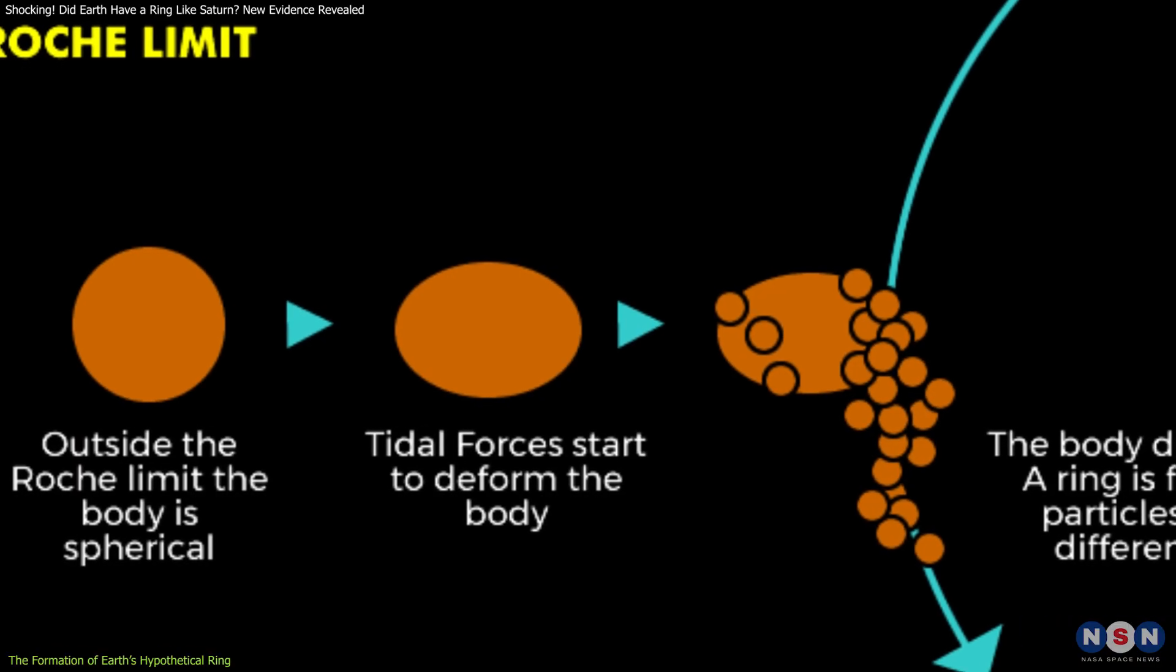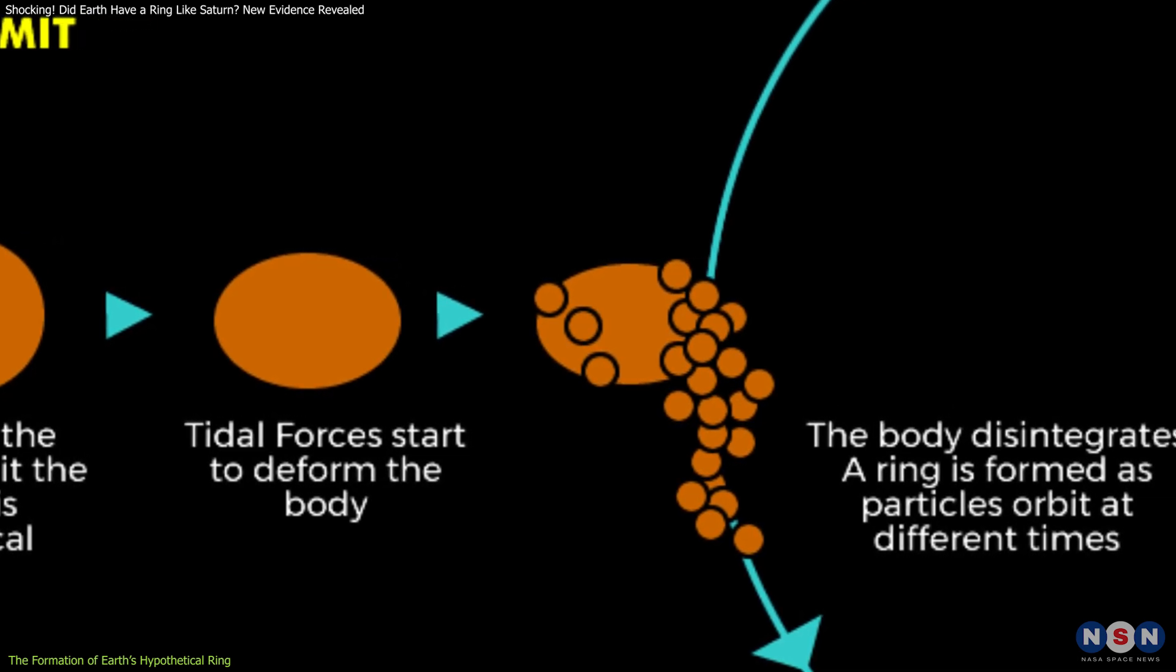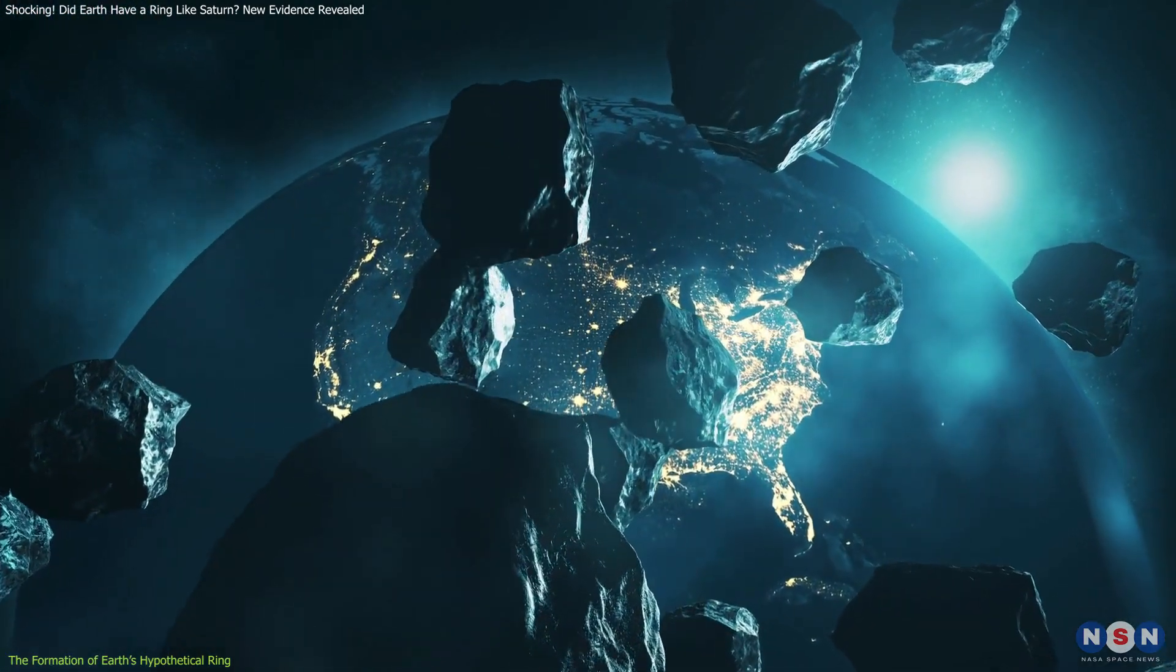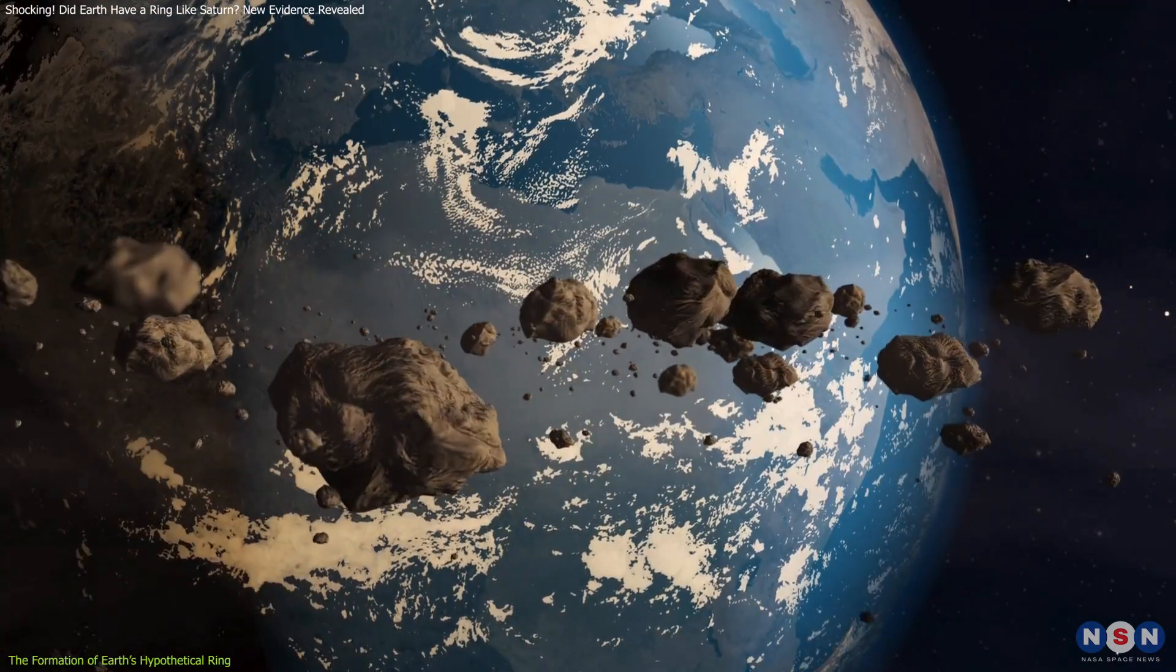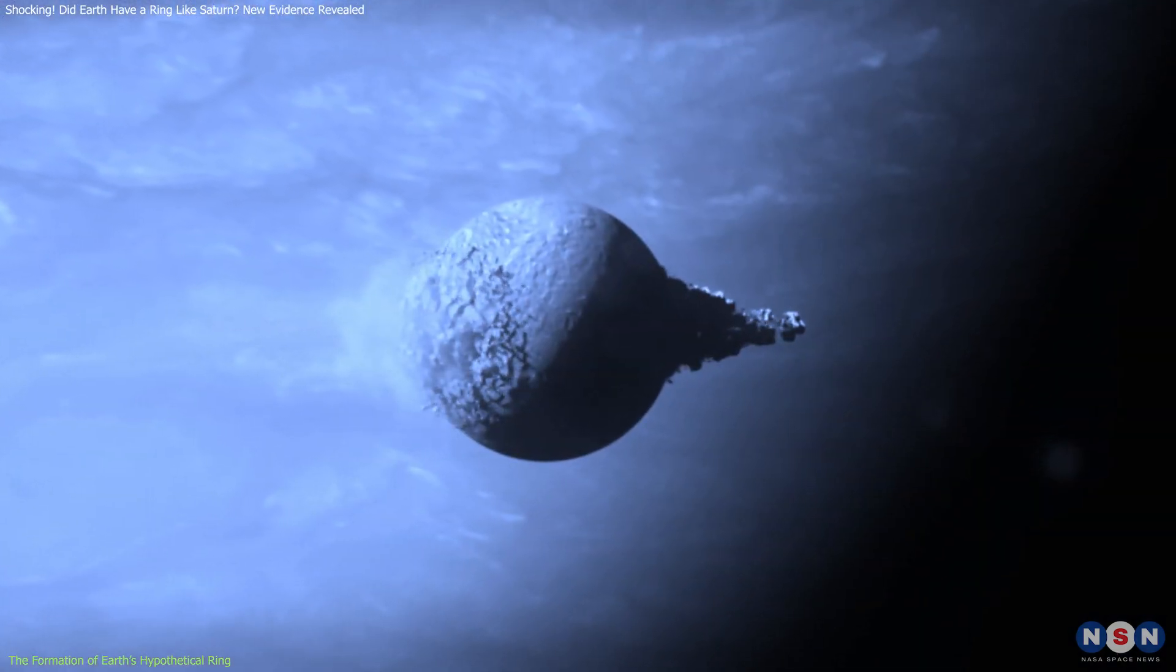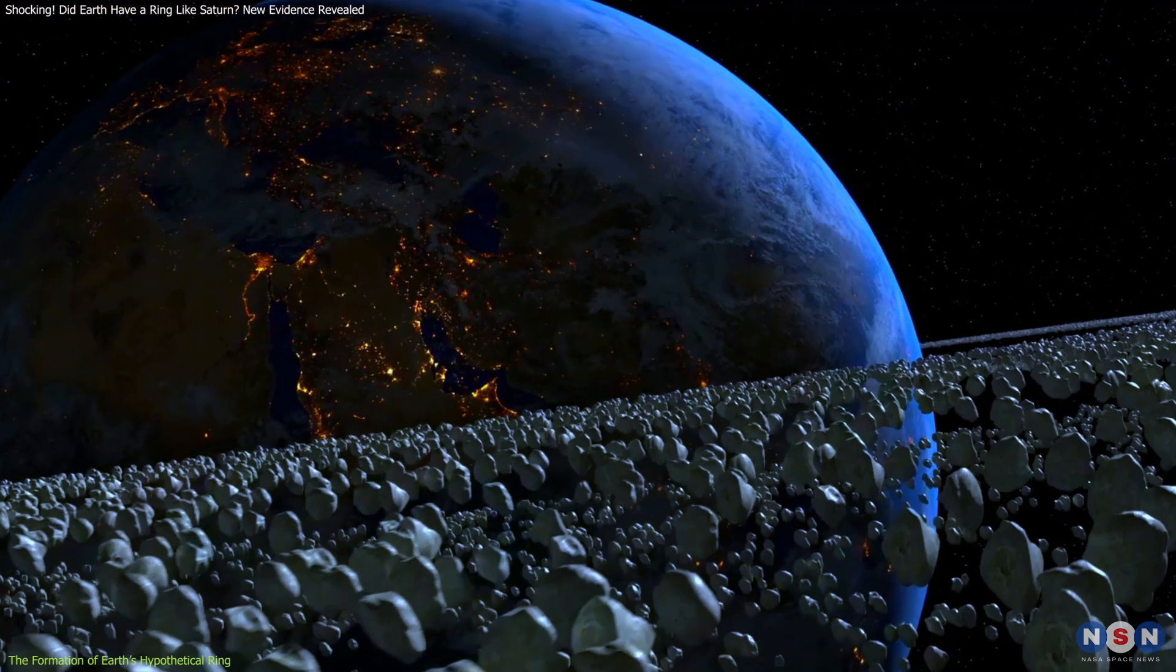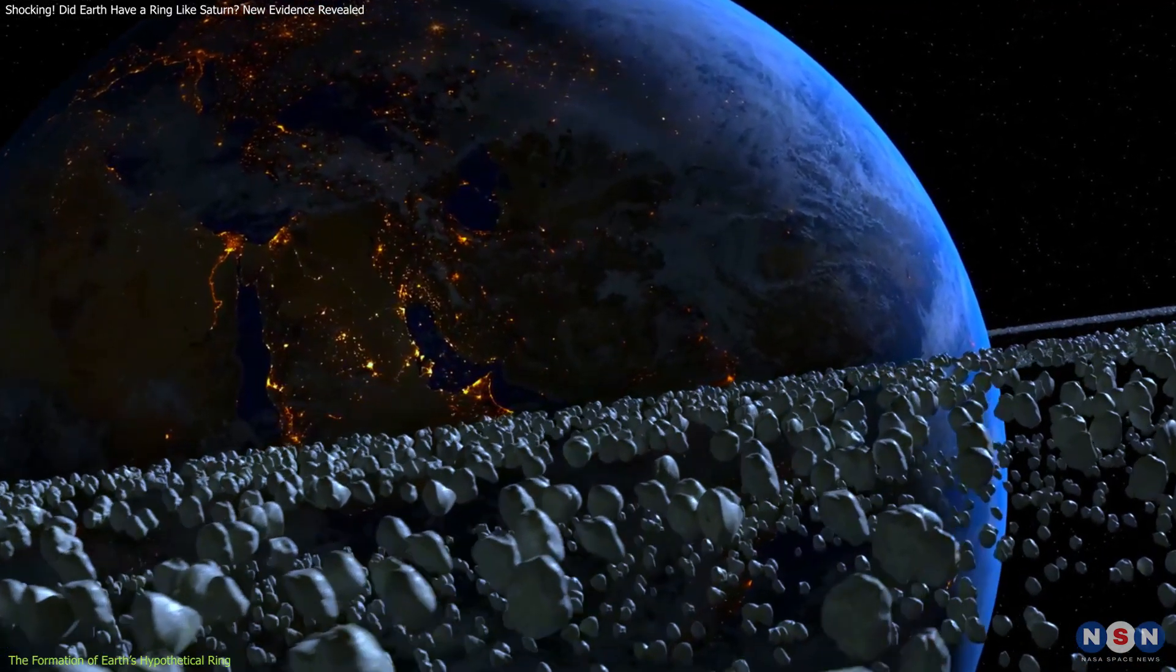The Roche Limit is the distance within which an object held together only by its gravity will disintegrate due to tidal forces of a larger body. For Earth, the Roche Limit varies depending on the composition of the asteroid. A solid body might disintegrate around 3,000 kilometers away, while a loosely compacted one could break apart at up to 15,800 kilometers. Once the asteroid broke apart, the debris could have spread out to form a ring around Earth.